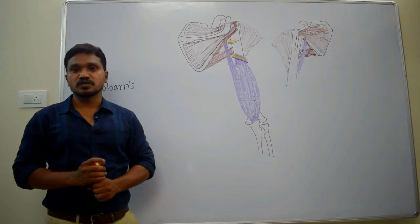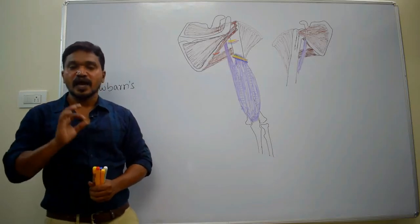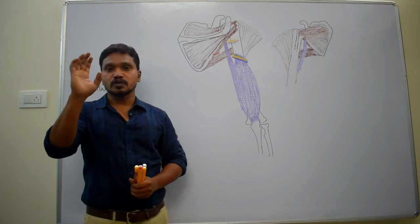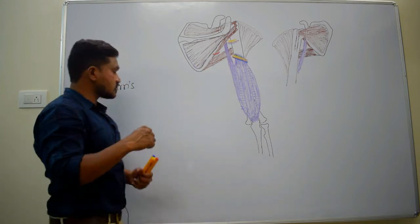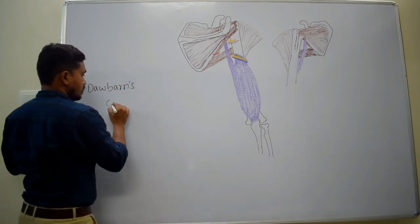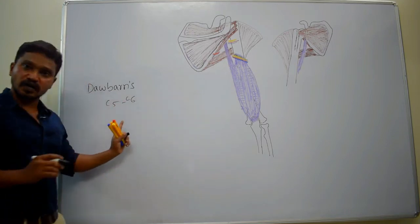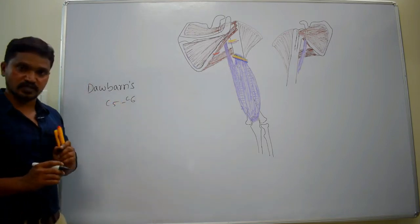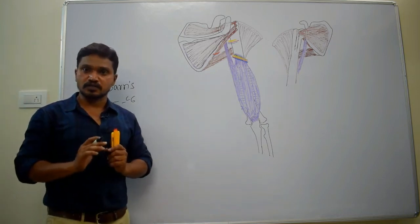The axillary nerve is a branch from the posterior cord of the brachial plexus. Its root value is C5 and C6.